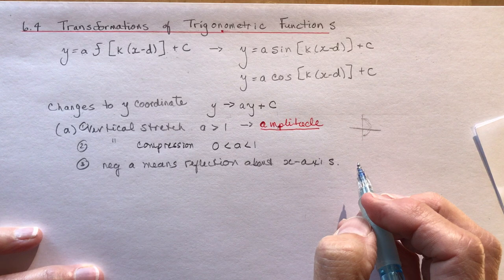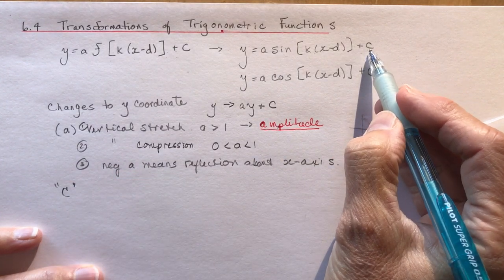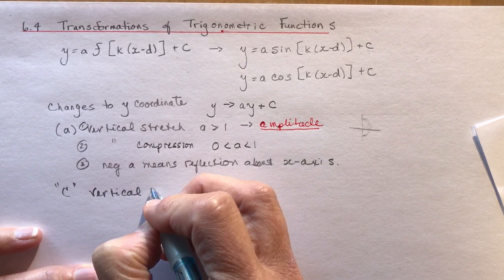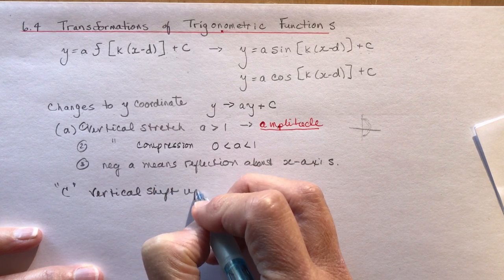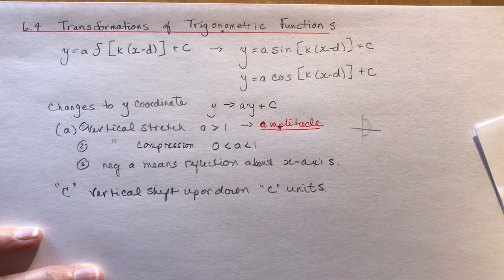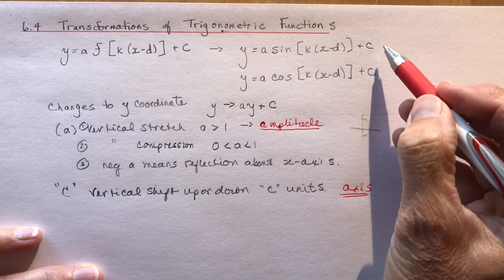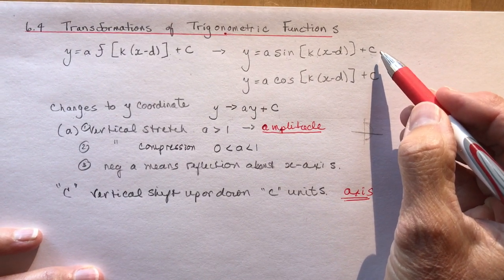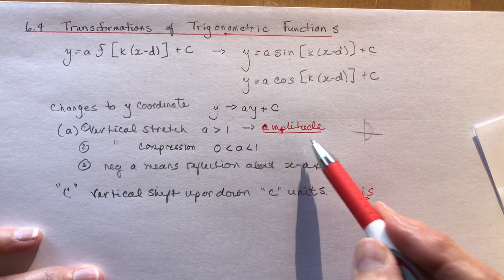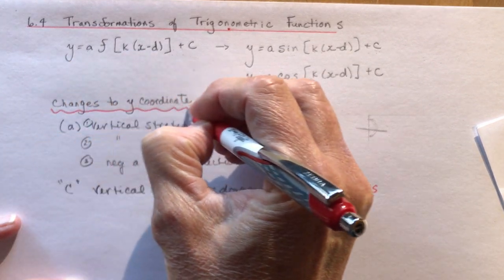The c value gives you a vertical shift up or down c units. In terms of our trigonometric functions, c tells you where the axis of the function is going to be. So if you have +5 at the end, your axis is at y = 5, and then you adjust your amplitude from that axis. Amplitude and axis — those are the two important changes to the y-coordinate.